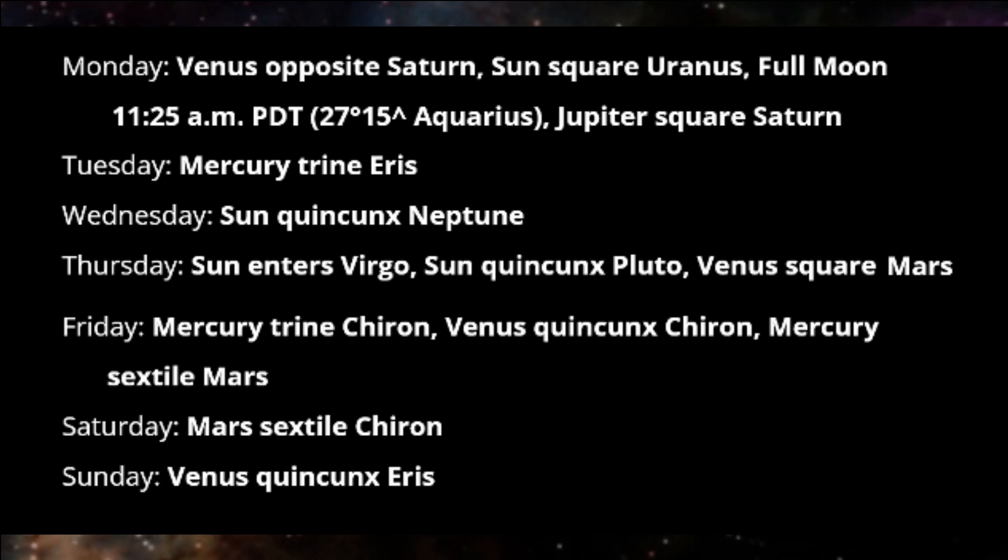Also on Thursday, the Sun is Quincunx Pluto. We may feel on edge today, and people may be critical, demanding, or controlling.